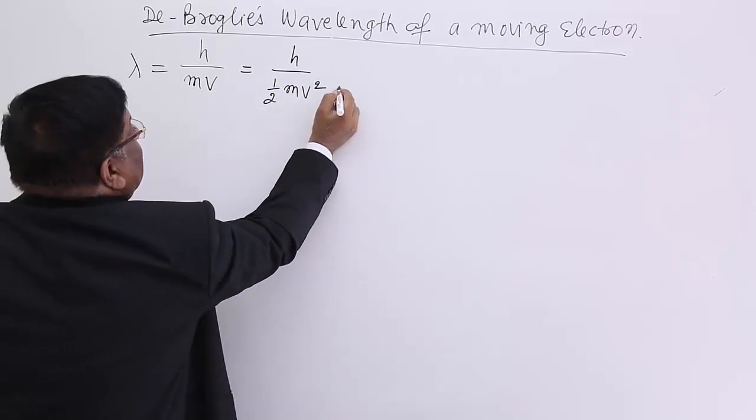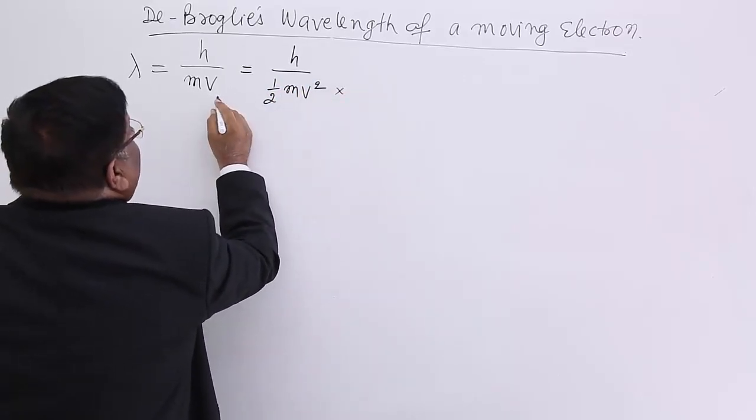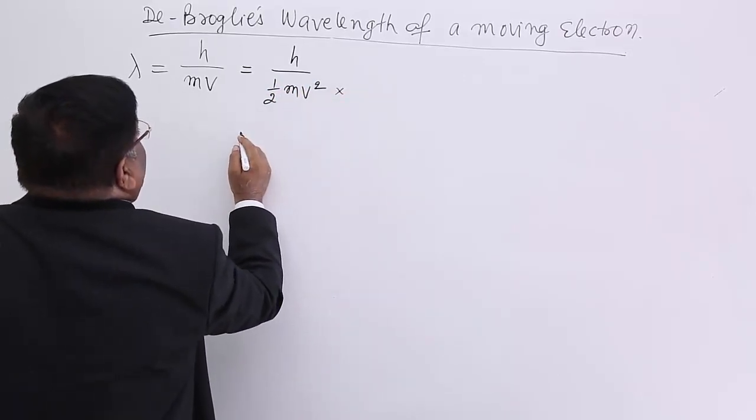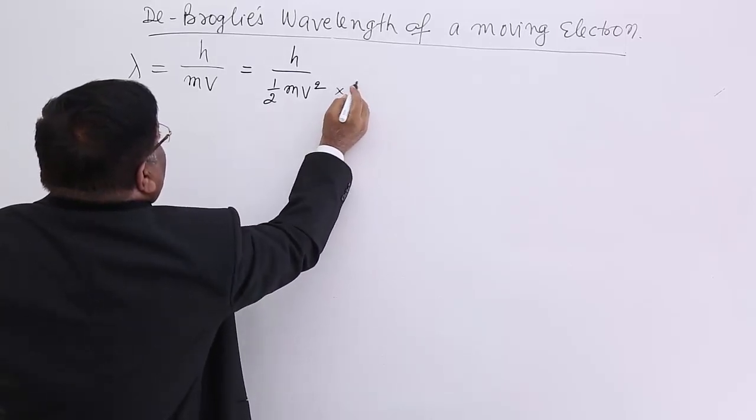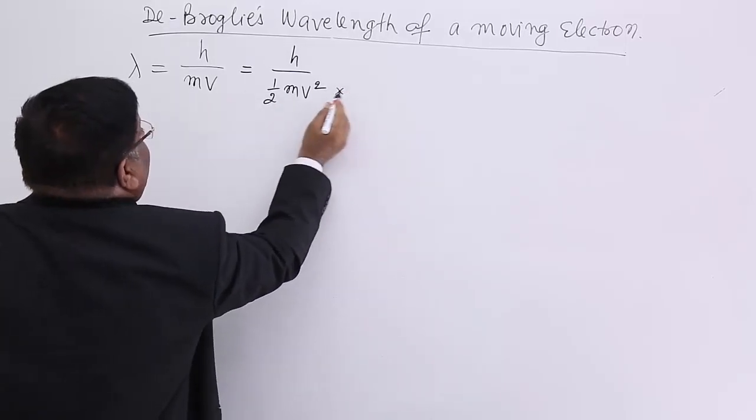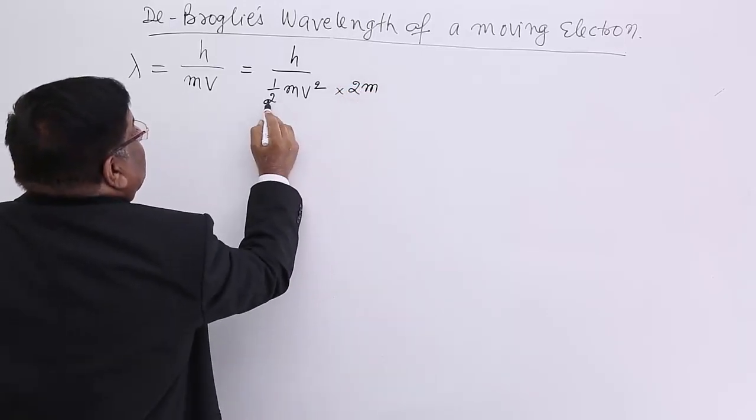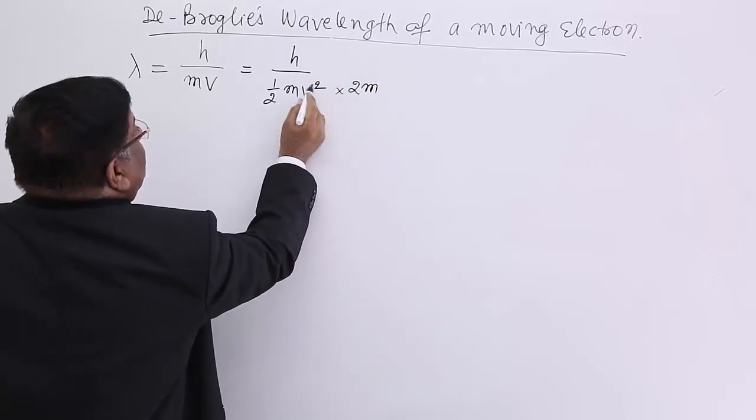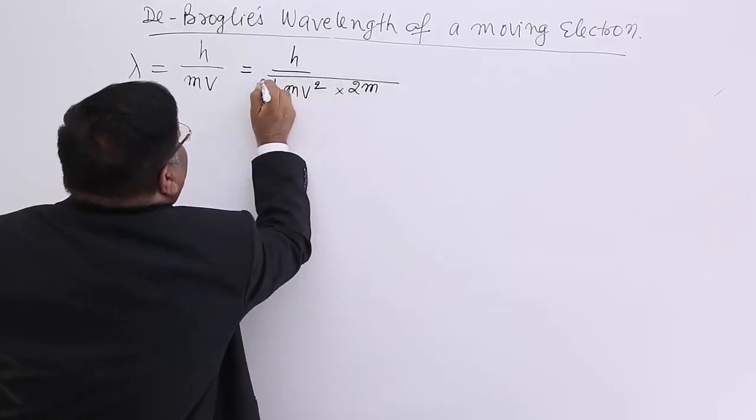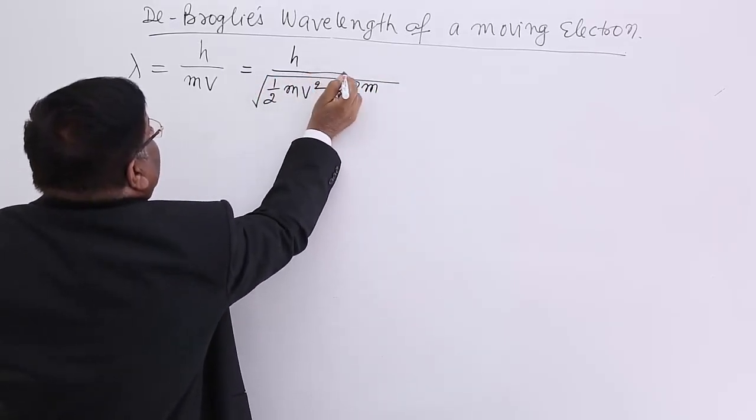it is multiplied with M. So this is 2M. This is M²V² and we make it square root.